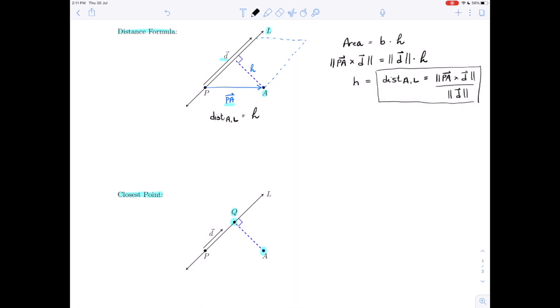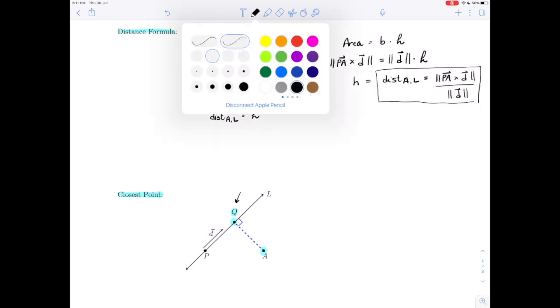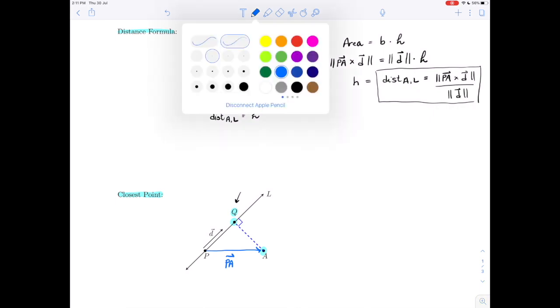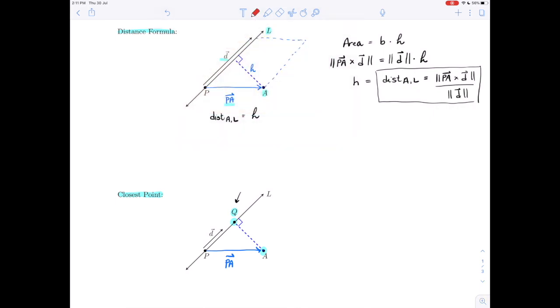Now, if we want more than that, if we actually want to know this point Q, our closest point, well, we can start out the same way, we can start out by constructing a vector from the point that we can see on the line, to point A, so vector PA.